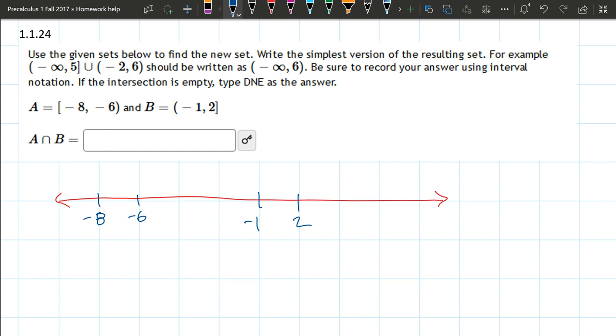I'm going to draw the A set. We have negative 8 to negative 6, and I got closed at negative 8, open at negative 6. Our B set is open at negative 1 and closed at 2.